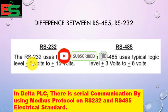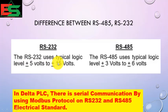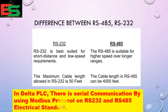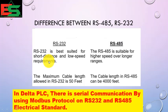In RS-232 the voltage range is plus/minus 5 to plus/minus 15 volts. But in case of RS-485 it is plus/minus 3 to plus/minus 6 volts. In Delta PLC there is serial communication using Modbus protocol on RS-232 and RS-485 electrical standards. RS-232 is very good for short distance, like communication between a PLC and a PC, so mostly we use RS-232 for that.